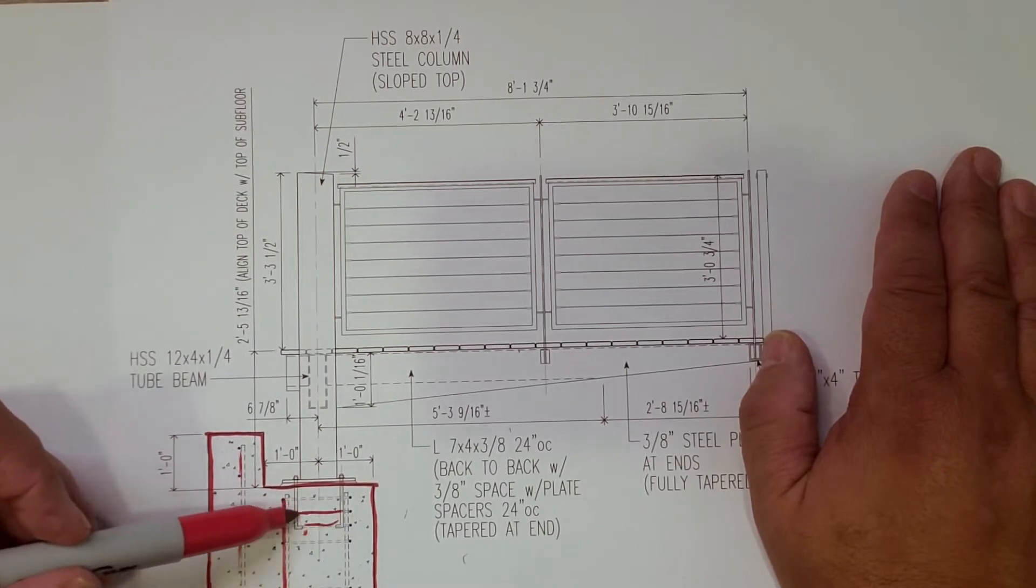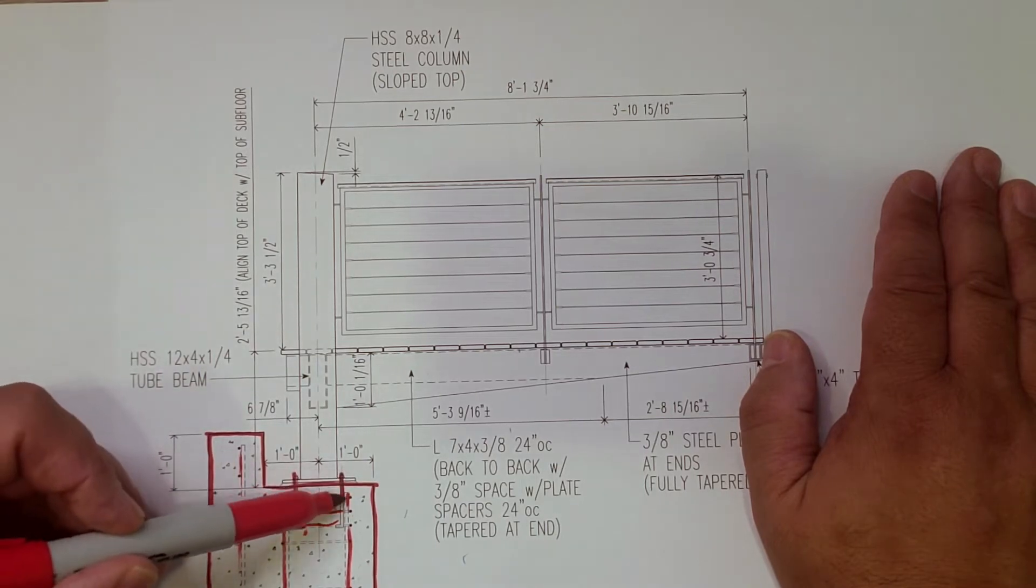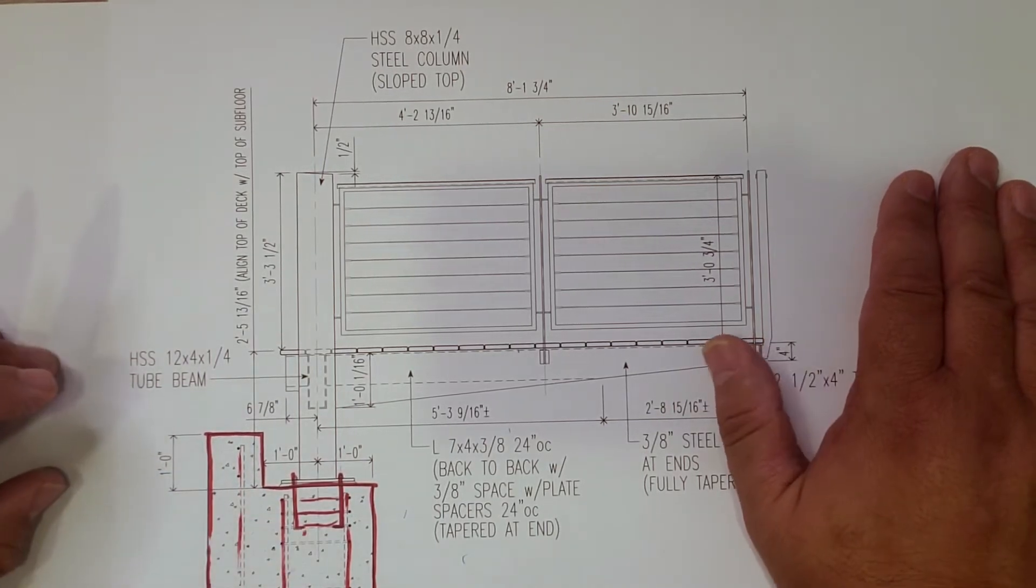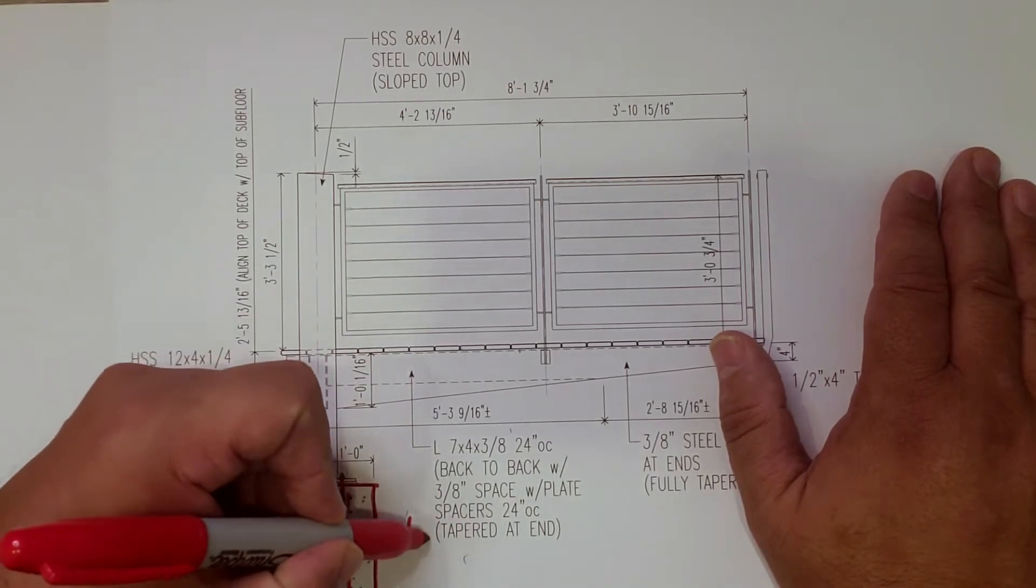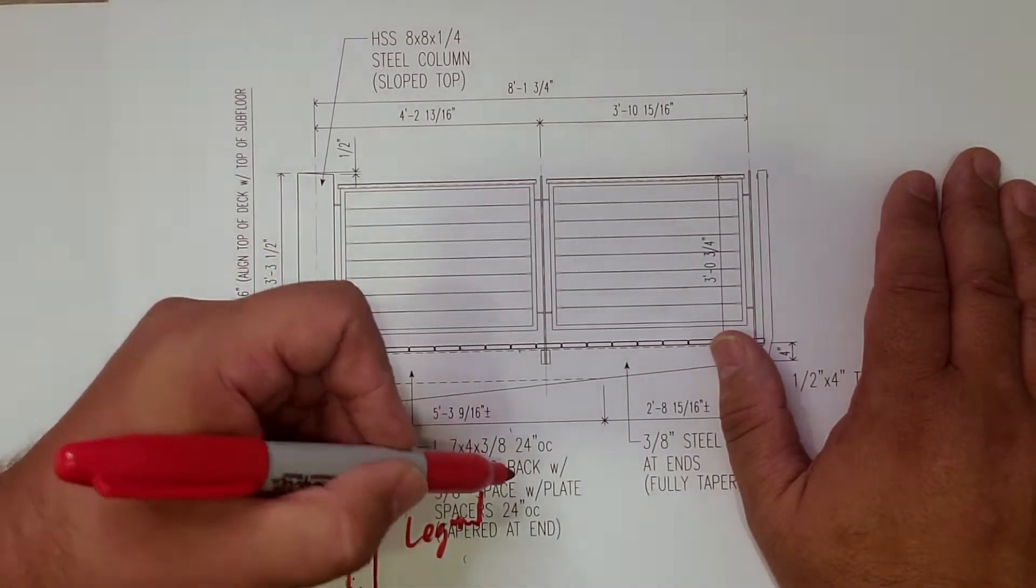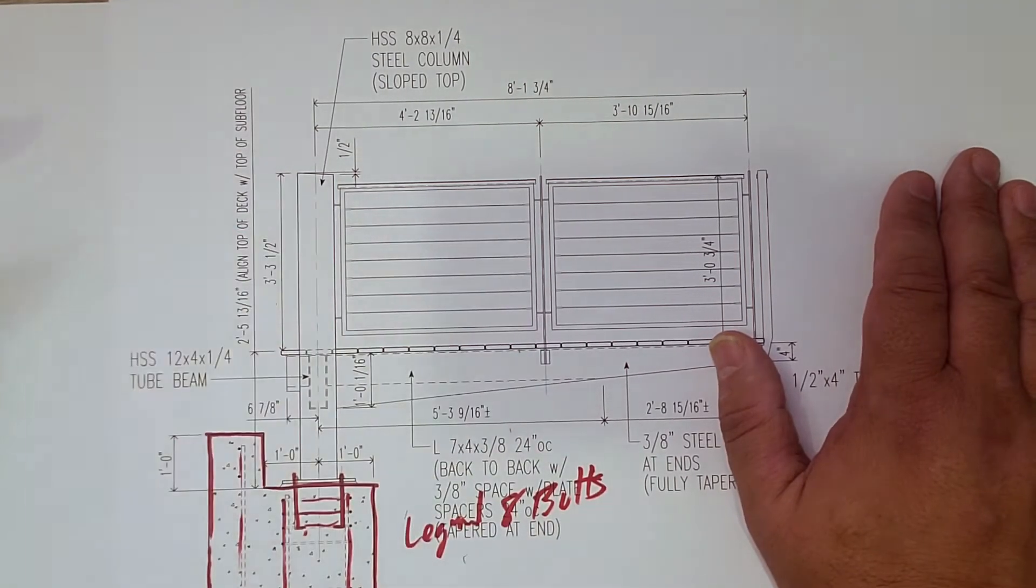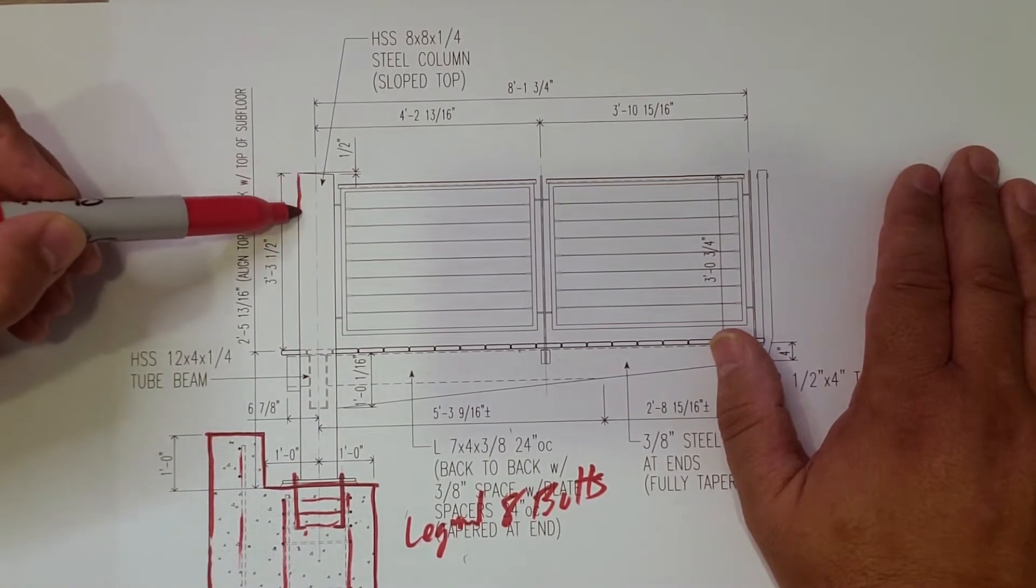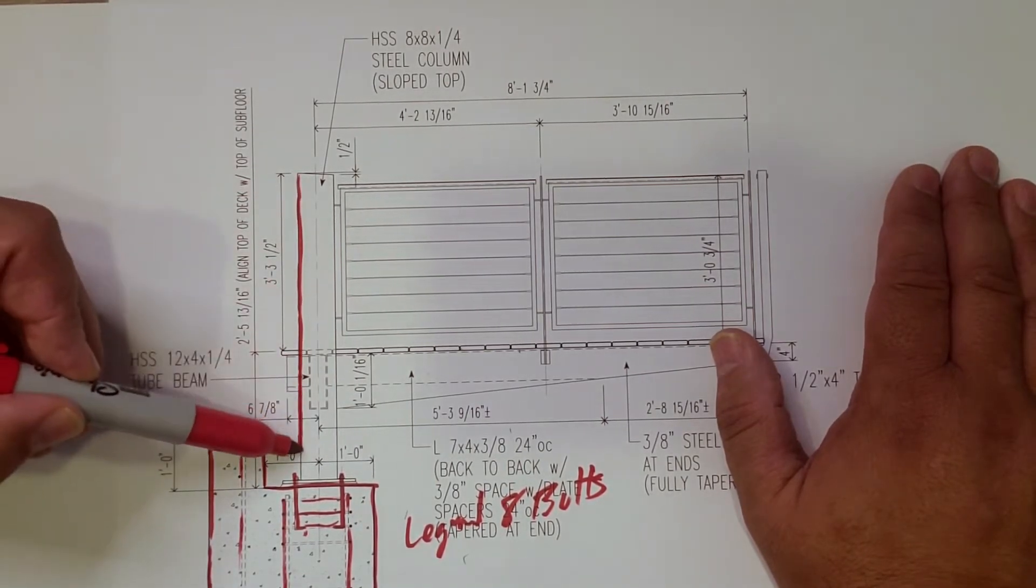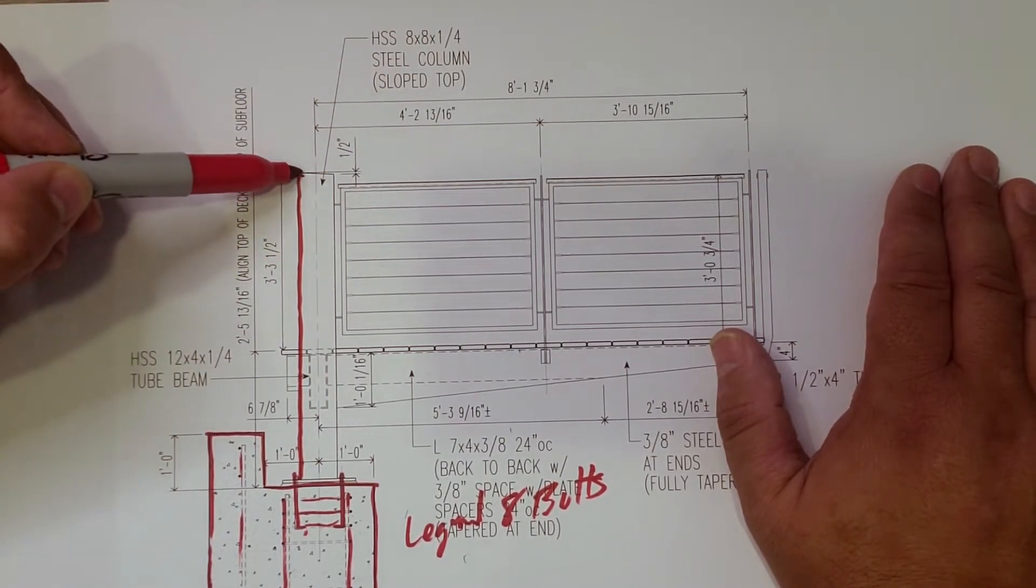A bunch of reinforcing in there, a bunch of stirrups in there. And then, those four bolts per pier, two piers. Legend of eight bolts, as my buddy Mark Lilly would call it. So, we have that. We have this post here. You can see that's an eight by eight, quarter inch thick.